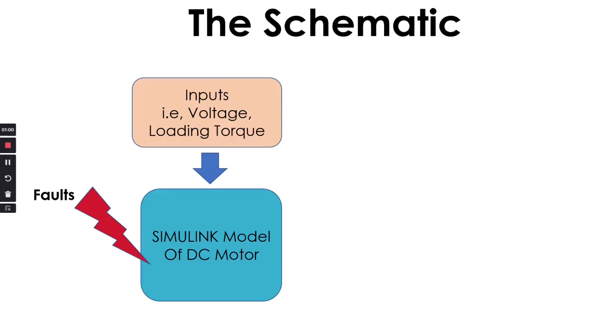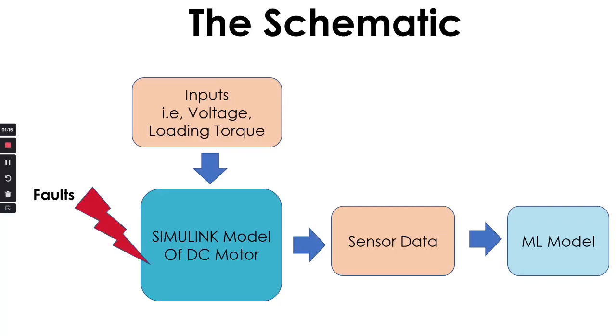Then we'll introduce some faults manually into this DC motor model that we created and obtain the sensor data. We'll have two sensors in this case: one current sensor and one velocity sensor. That sensor data will be exported as a CSV file to our Python environment where you can do machine learning data analysis and train machine learning models to do fault diagnosis.